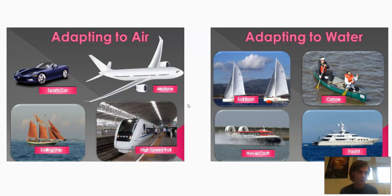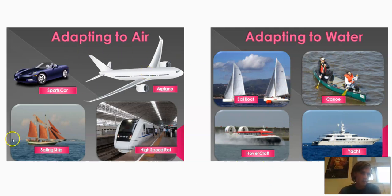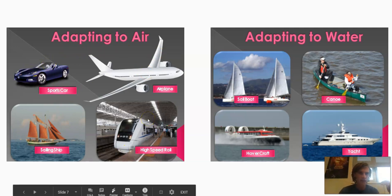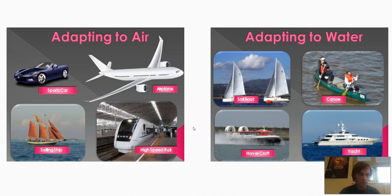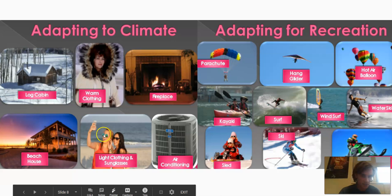Here are some other examples of adaptations. Human beings have created different methods of transportation to help them adapt to both air and to water. Different kinds of boats would be an example of an adaptation to living in a watery environment. An airplane, a sailing ship, the way that a sports car is designed with aerodynamics, or a train have been adapted to move through the air in a certain way. Humans also adapt to their climate with warm clothing or fireplaces. Beach houses are often raised up in case there is flooding. Sunglasses are an adaptation, air conditioning. And we even have adaptations for recreating, like water skiing, surfing, hang gliding, or kayaking.